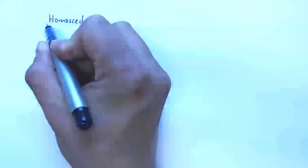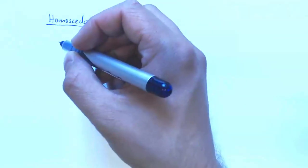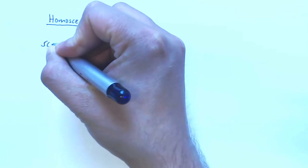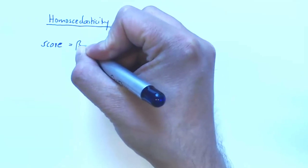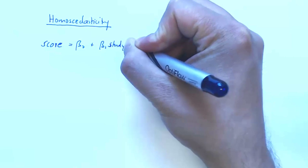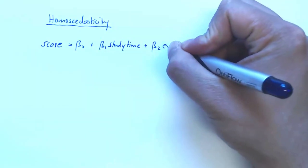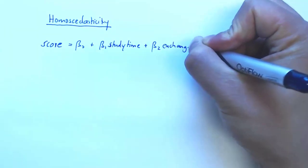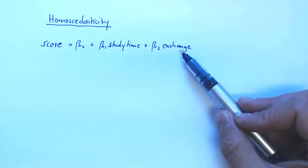To introduce the concept of homoscedasticity, let me give you a simple example. So we are back again in our exam score example. Specifically we want to regress the exam score on study time and one additional variable is called exchange.